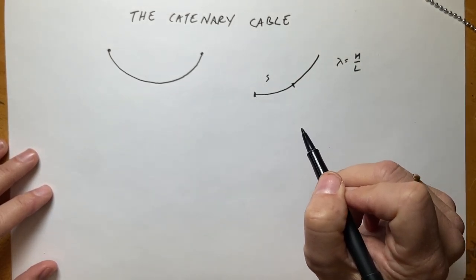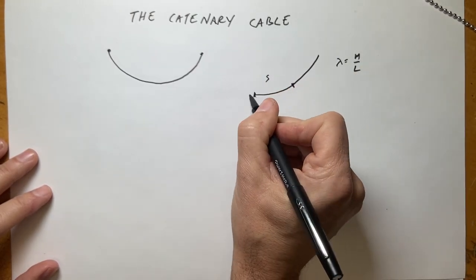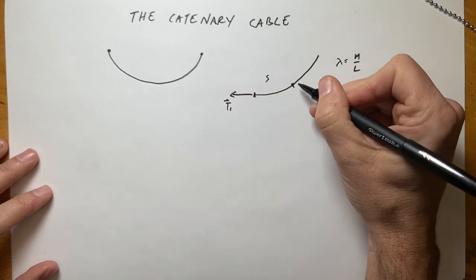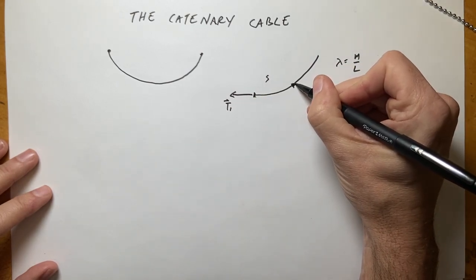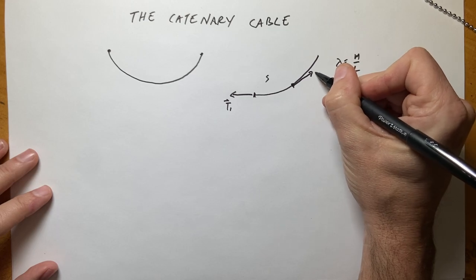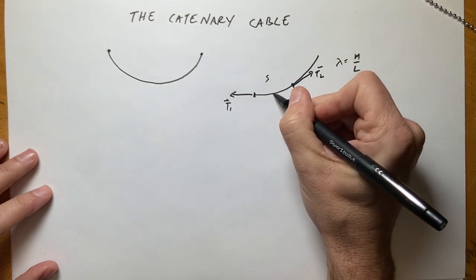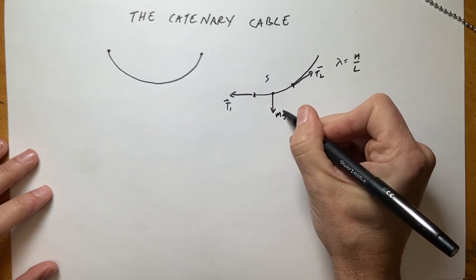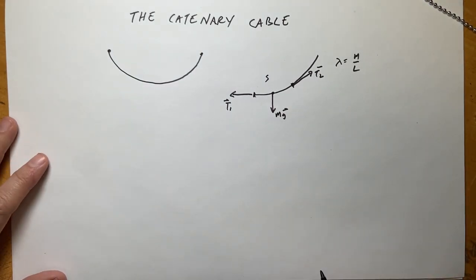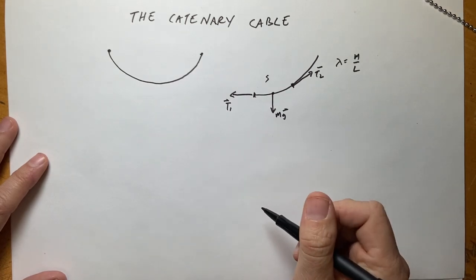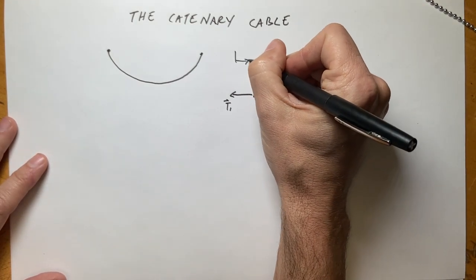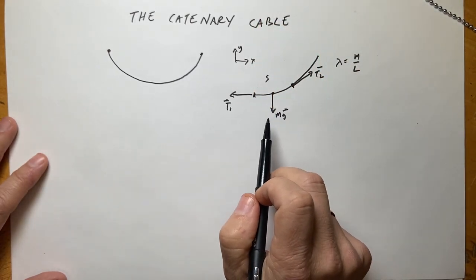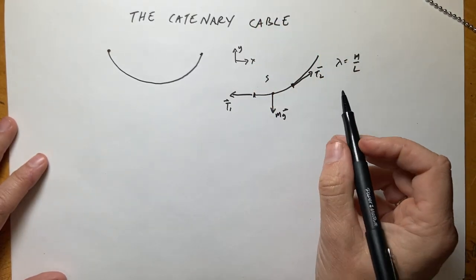The net force on this section is zero. That means I have three forces on this piece of the cable: I have the tension pulling here — I'll call that T1. I have the tension on this side — I'll call that T2. Then I have the gravitational force mg. If that is in equilibrium, these forces have to add up to zero. The sum of the forces in the x-direction is zero, and the sum of the forces in the y-direction is zero.